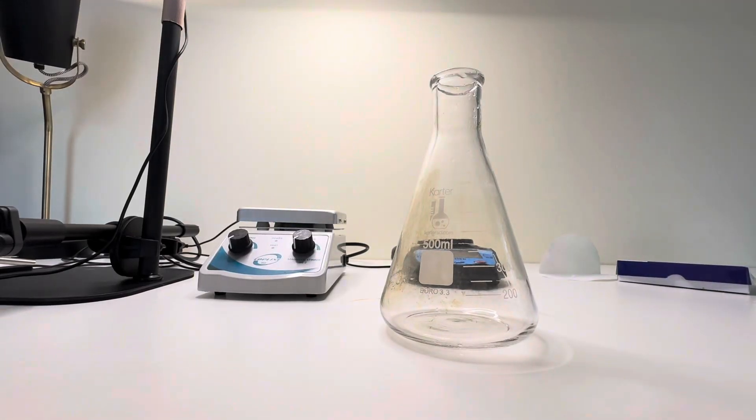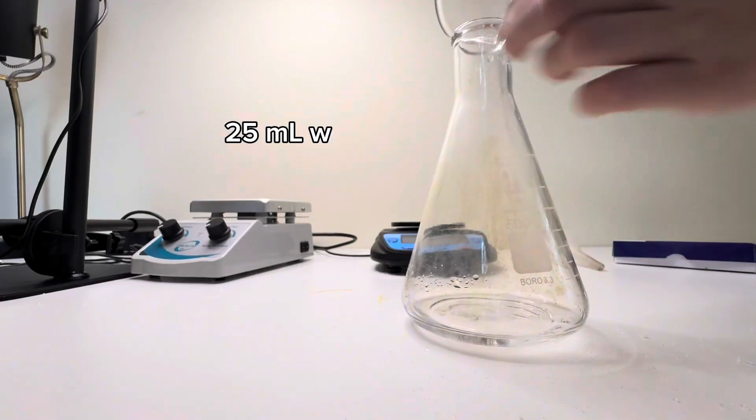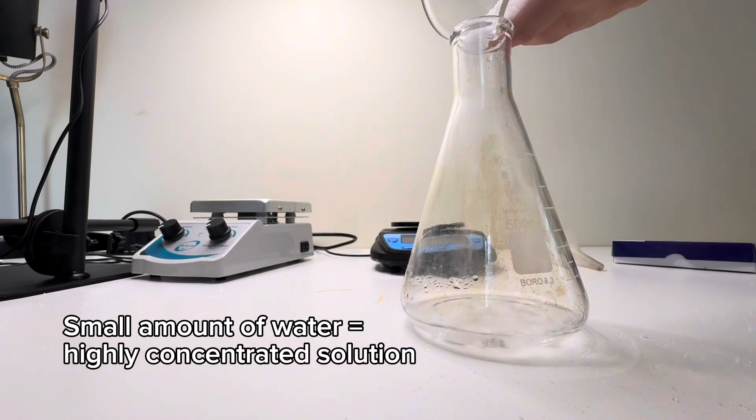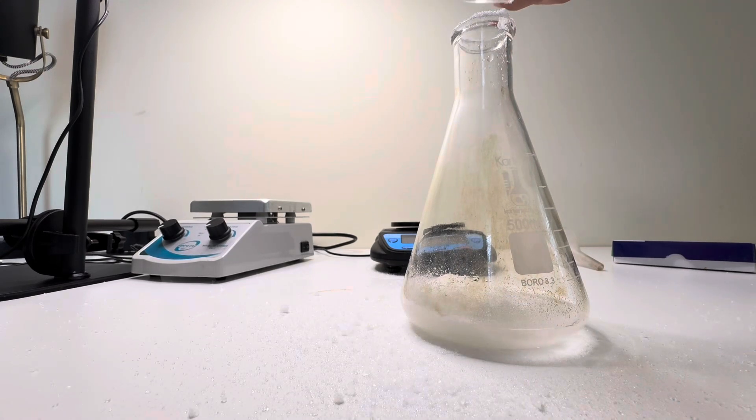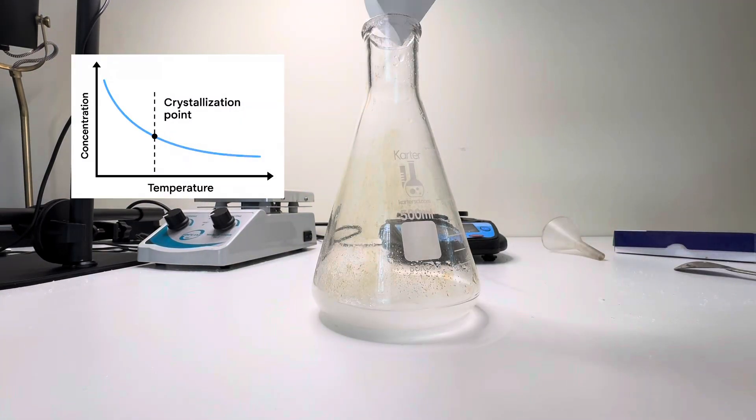Next we make our supersaturated solution. I'm using 25 milliliters of water. Our goal is to add more sodium acetate than is soluble at room temperature. Less water means it will reach its crystallization point faster when triggered, which you'll see looks really cool.